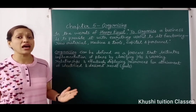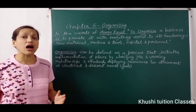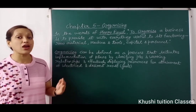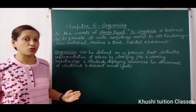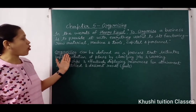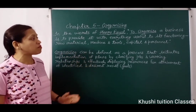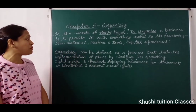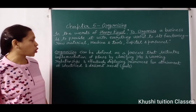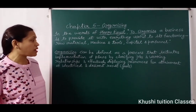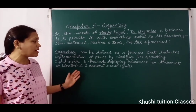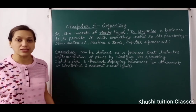यह fix होता है कि कौन किसे report करेगा, कौन किससे orders लेगा — यानि post के हिसाब से employees का relation fix होता है. So, we can say that organizing can be defined as a process that initiates implementation of plans by clarifying jobs and working relationships and effectively deploying resources for attainment of identified and desired results.